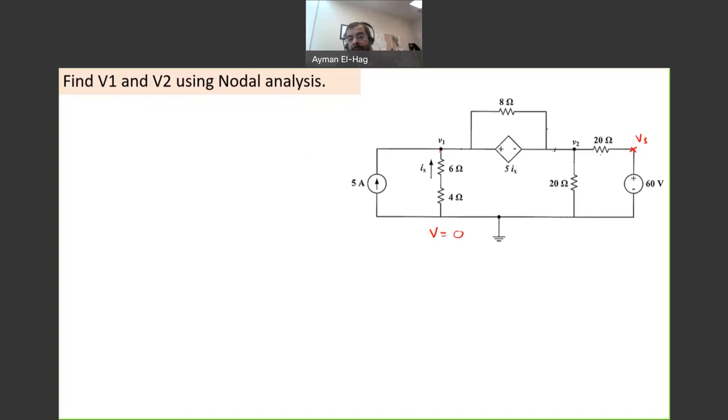Node number one or V1 is connected to this dependent voltage supply. Node two is connected also to a node that has a voltage supply. So I cannot actually apply KCL to any of the nodes in that question. Another thing: V3 actually is known to us, equal to 60 volts. So now I have two unknowns, V1 and V2. How many equations do I need? I need two equations to be able to solve.